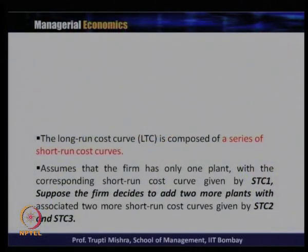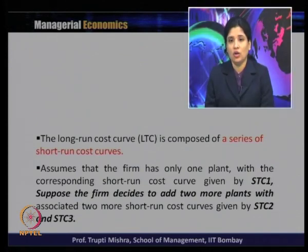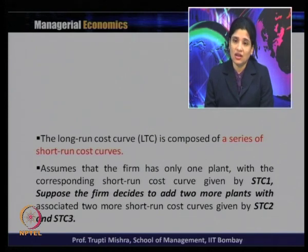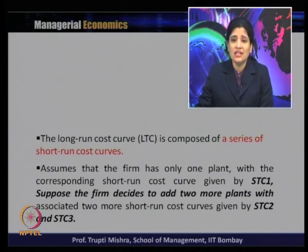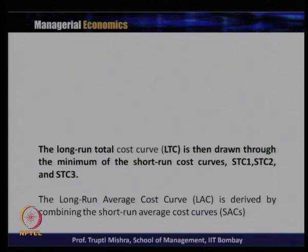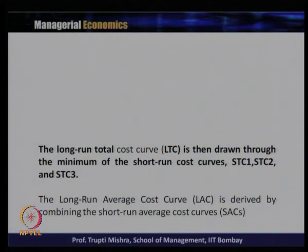The long run cost curve is composed of a series of short run cost curves. When you take more than two or three short run cost curves, that gives us the long run cost curve. Assume a firm has one plant with short run cost curve STC1. If the firm decides to add two more plants with associated cost curves STC2 and STC3, then together STC1, STC2, and STC3 will lead to the long run total cost curve.